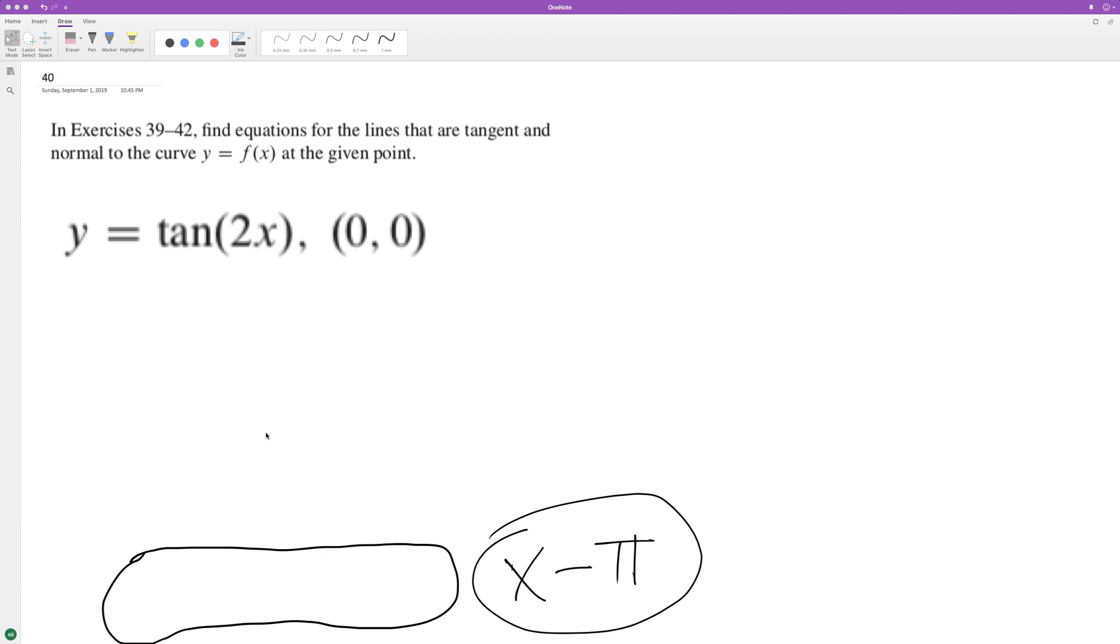Figure out the tangent line and the normal line to the curve at the point (0,0). First thing we need to do is find the slope at zero, so the derivative of this.